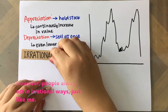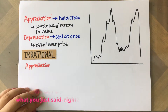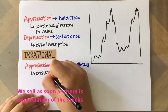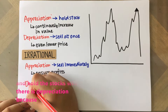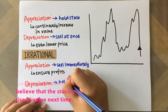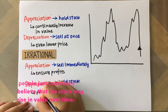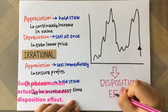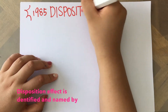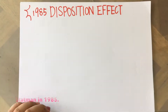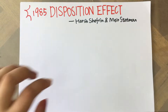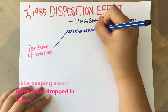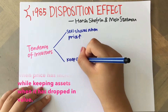However, people always act in an irrational way, just like me. We act the opposite — we sell as soon as there is appreciation of the stocks, and hold the stocks when there is depreciation, because people commonly believe that the stock may rise in value next time. Such a phenomenon actually has a name: the disposition effect. The disposition effect was identified and named by Kurt Shefrin and Meir Statman in 1985. To briefly summarize, it relates to the tendency of investors to sell shares when prices increase, while keeping assets when they have dropping value.